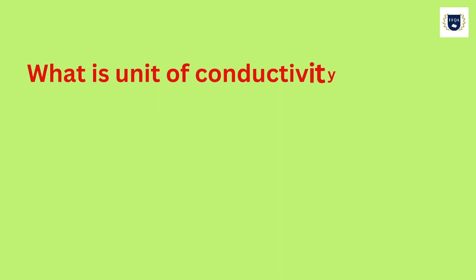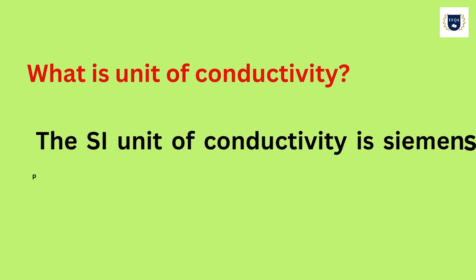What is unit of conductivity? The SI unit of conductivity is siemens per meter.